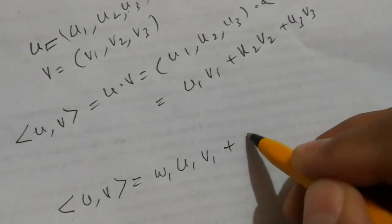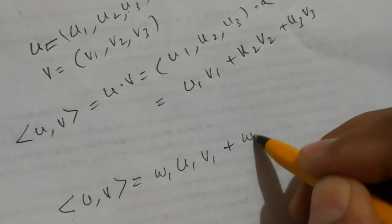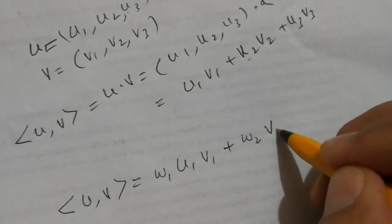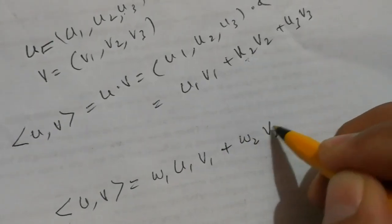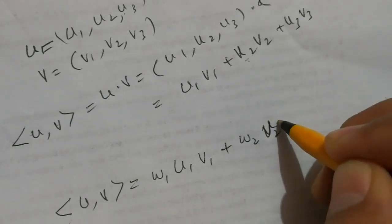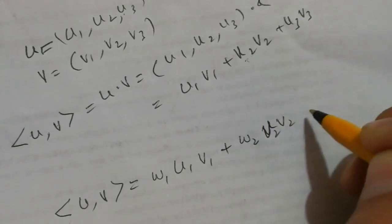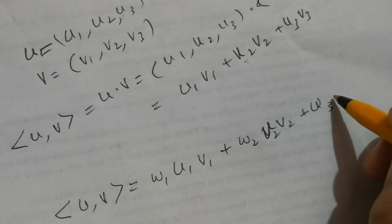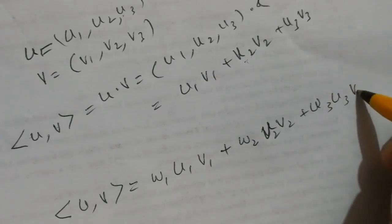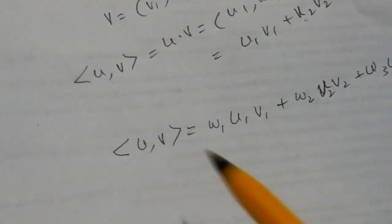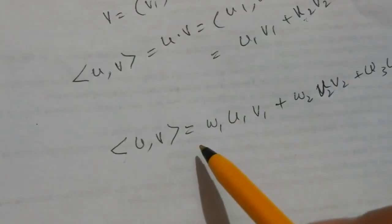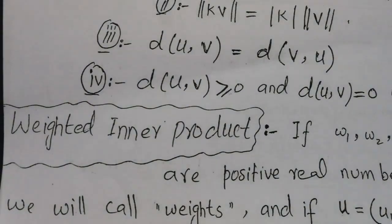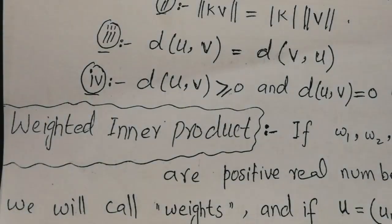The weighted inner product is then w1·u1v1 + w2·u2v2 + w3·u3v3. This is called the weighted inner product.